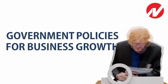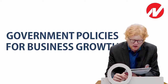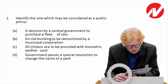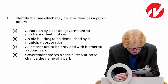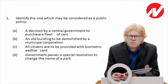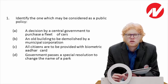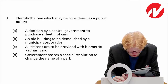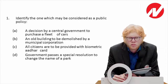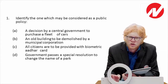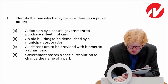The very first one — mark it as a good MCQ to be asked for exams. Number one: identify which may be considered as a public policy. Option A: a decision by a central government to purchase a fleet of cars — this is simply a decision taken by the central government, not for the whole public, so it is not the answer. Option B: an old building to be demolished by a municipal corporation — again, it is for a specific purpose, not for the whole public, so it is also not a public policy.